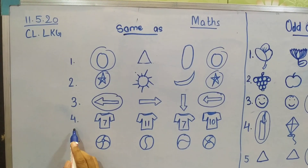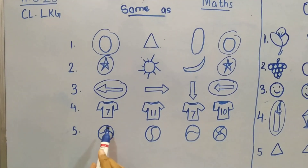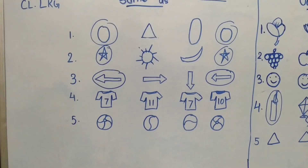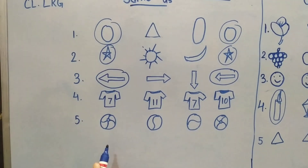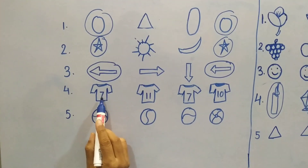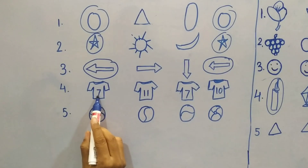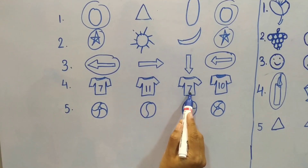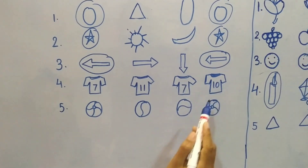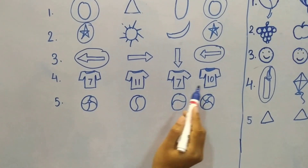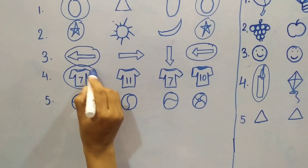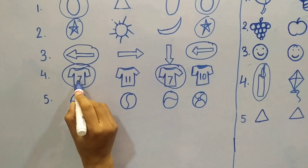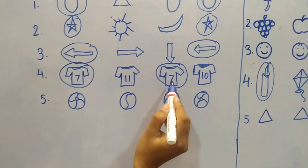Let's see number four. Look at these jerseys — they have got different numbers. Let's see which one is similar. This is jersey number seven, jersey number eleven, this is seven again, and ten. So which one is similar? These two are similar jerseys — same number. Can you see? Seven here and seven here also.